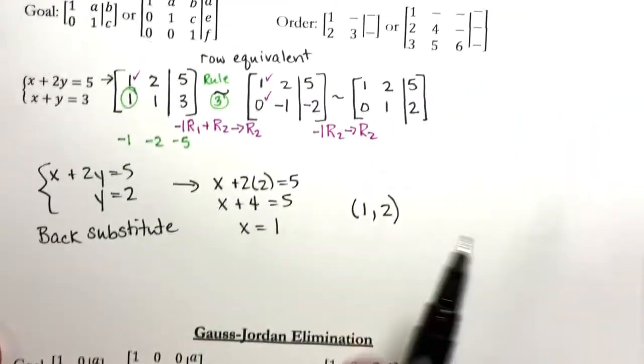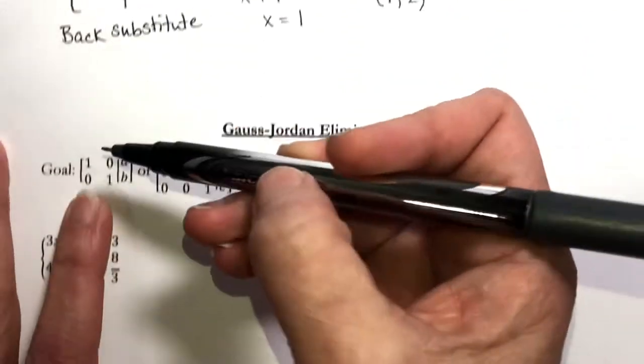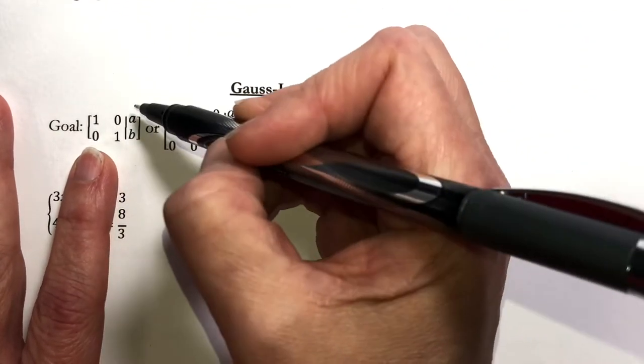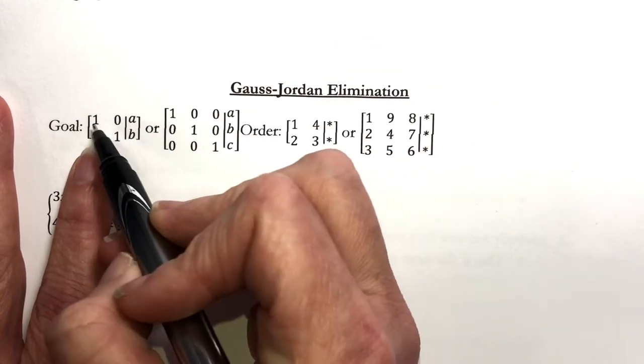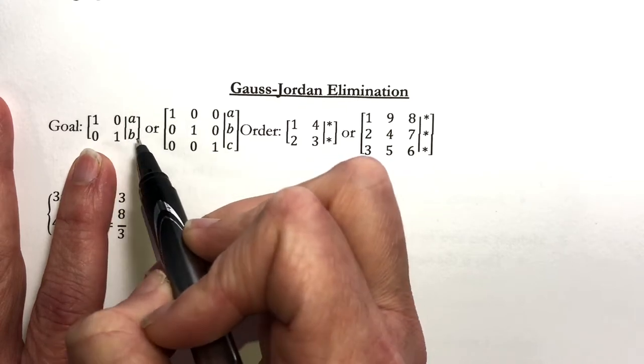The difference here versus here is that instead of allowing just anything right here, we're going to go another step and get a zero. Then what happens is we don't have to back substitute because if you go and write the system here, you're going to get x equals a, y equals b.